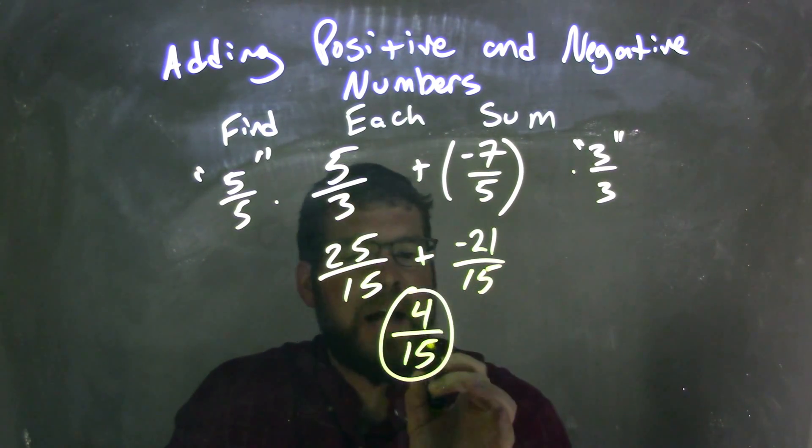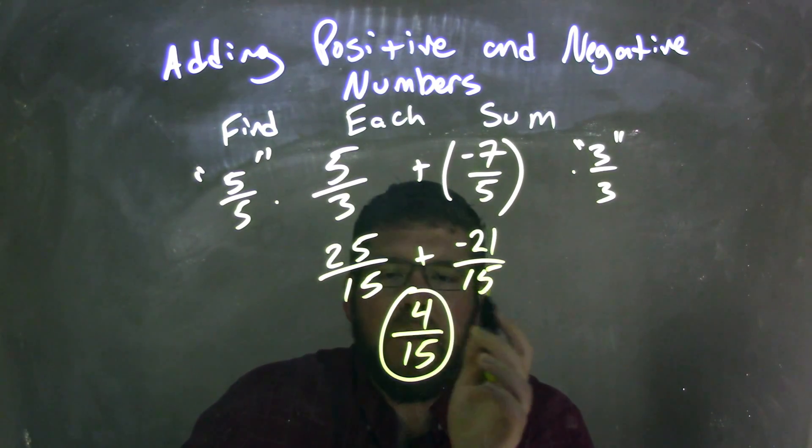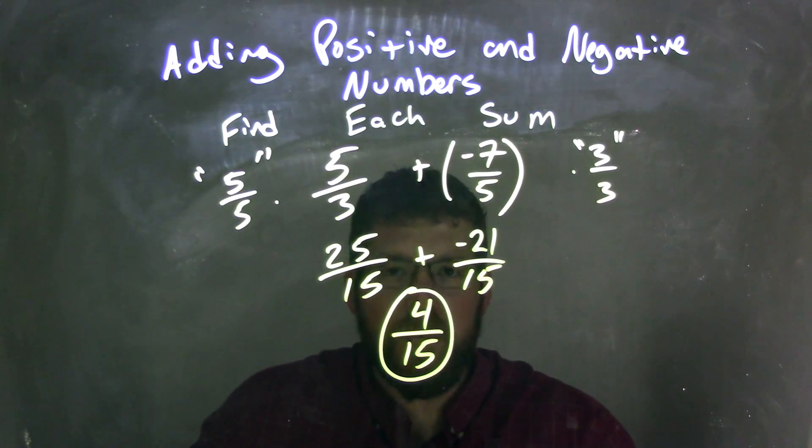We add them together. We keep the denominator the same when we add fractions, but we deal with the numerator. The base stays the same, we leave it alone. We just add the numerator. 25 plus a negative 21 is 4, and so 4 fifteenths is my final answer.